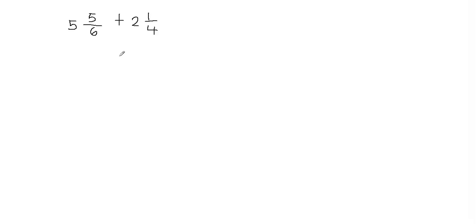In this video we'll learn how to add mixed fractions with unlike denominators. The first thing we're going to do is convert these mixed fractions into improper fractions. To do that we're going to multiply the whole number with the fraction's denominator first, and then whatever we get, we're going to add that to the numerator.